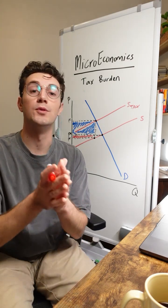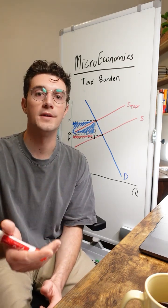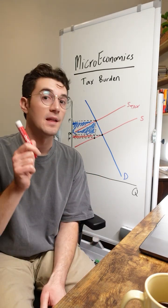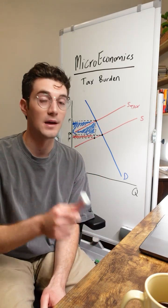And producers know that. So you're going to bear more of the burden of the tax because you're more willing to pay for the good even with the increased price. And that's why the more inelastic party bears the majority burden.